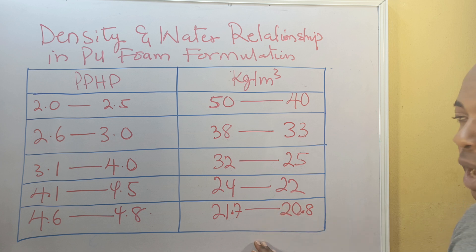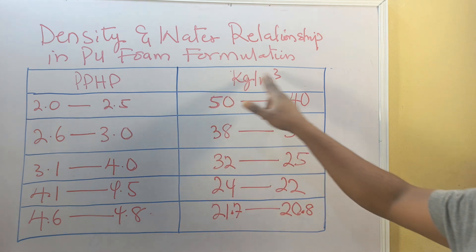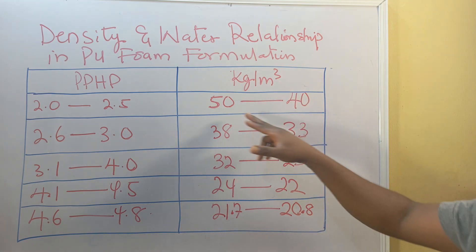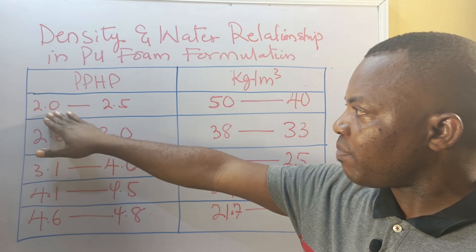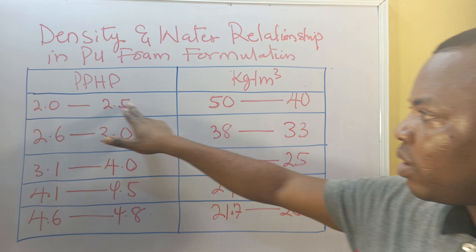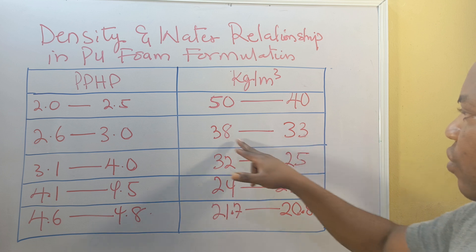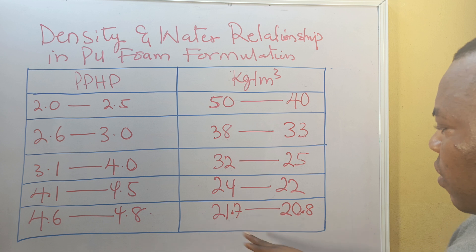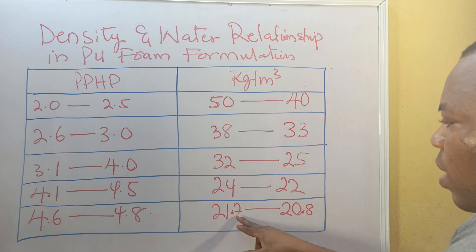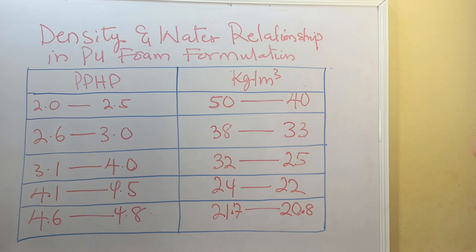In a water-blown formulation, you only use water to control the density. Look at the parts per 100 of polyol and the density. If you want to make a foam density between 40 and 50, you choose a parts per 100 of water within that range. Similarly for 33 to 38, 25 to 32, 22 to 24, and 20.8 to 21.7 — these are the water ranges.